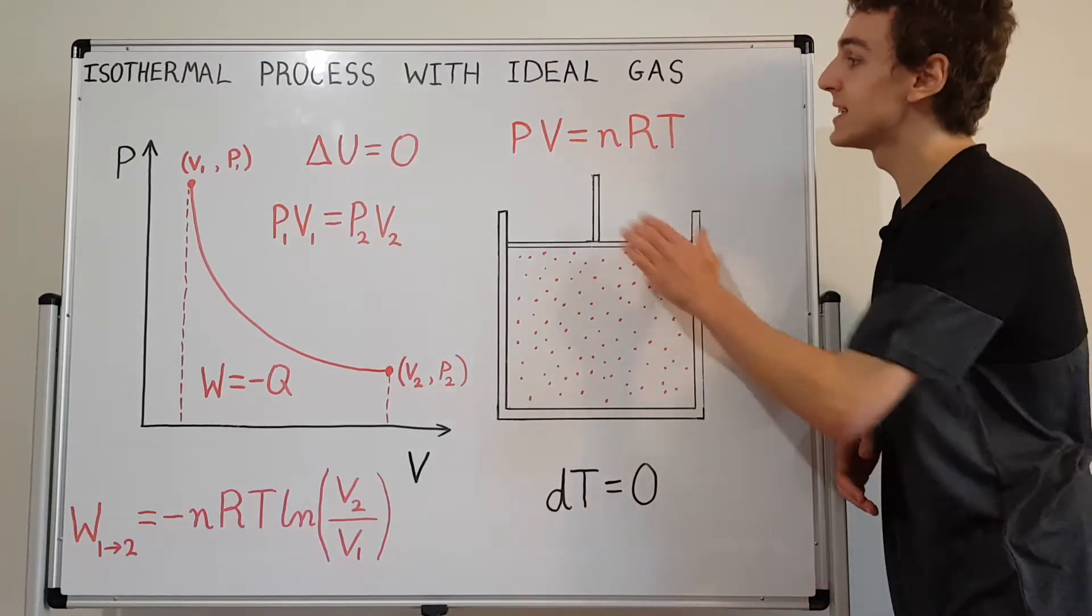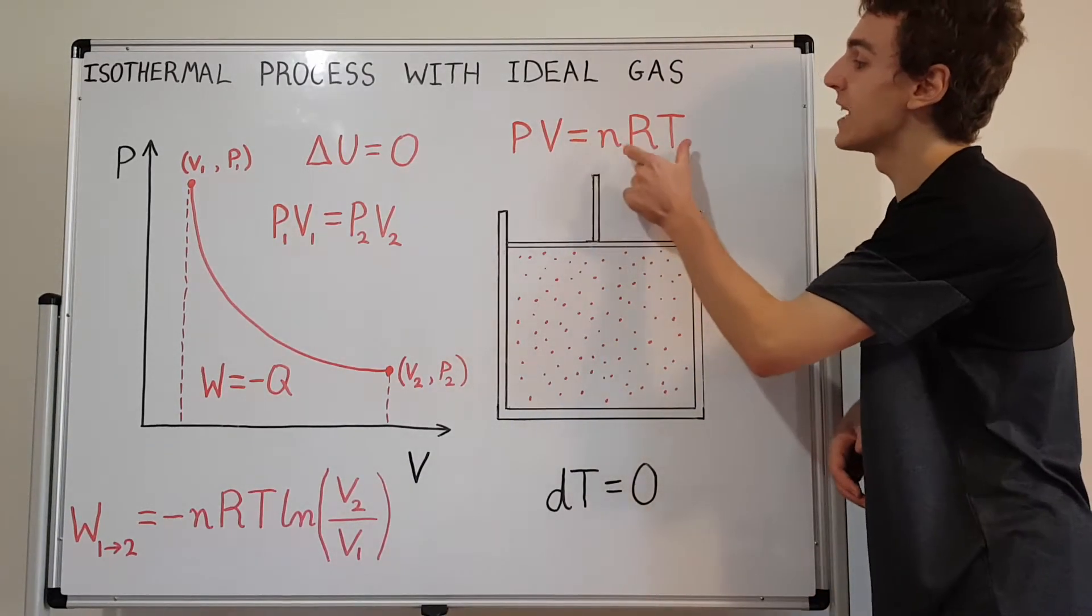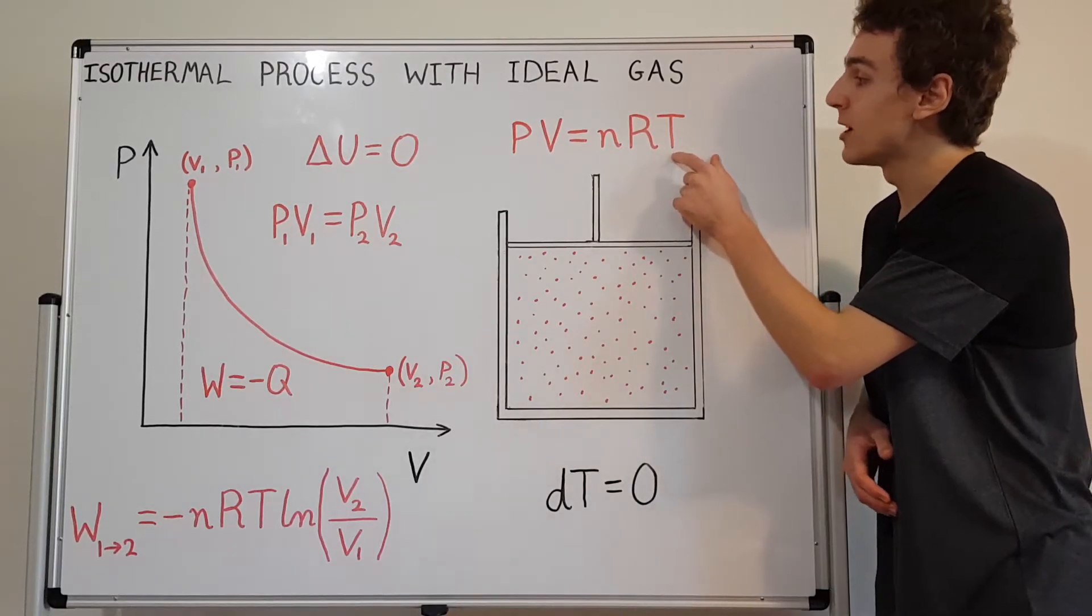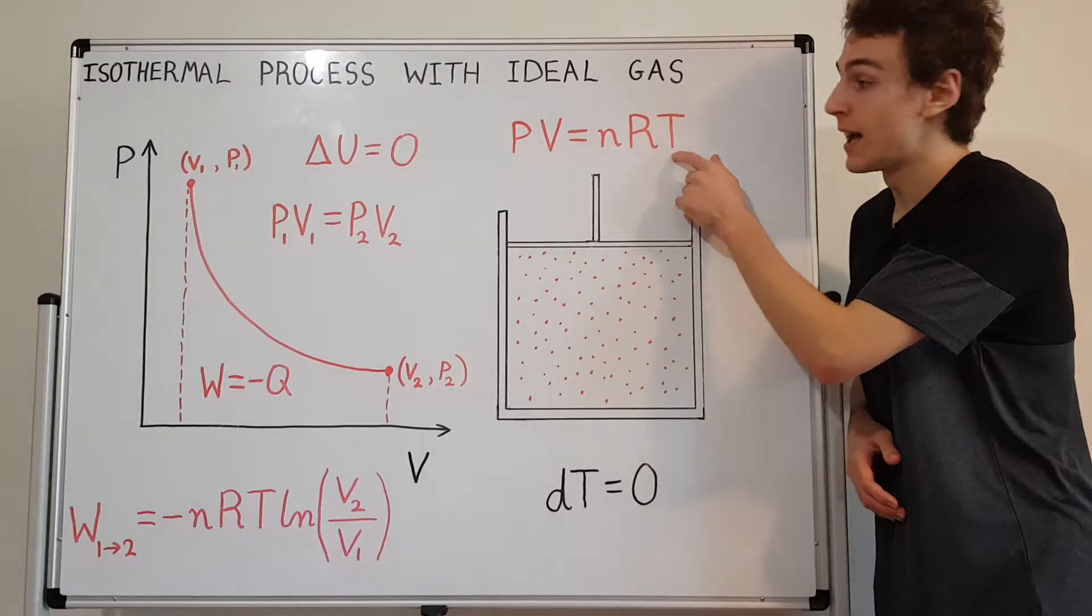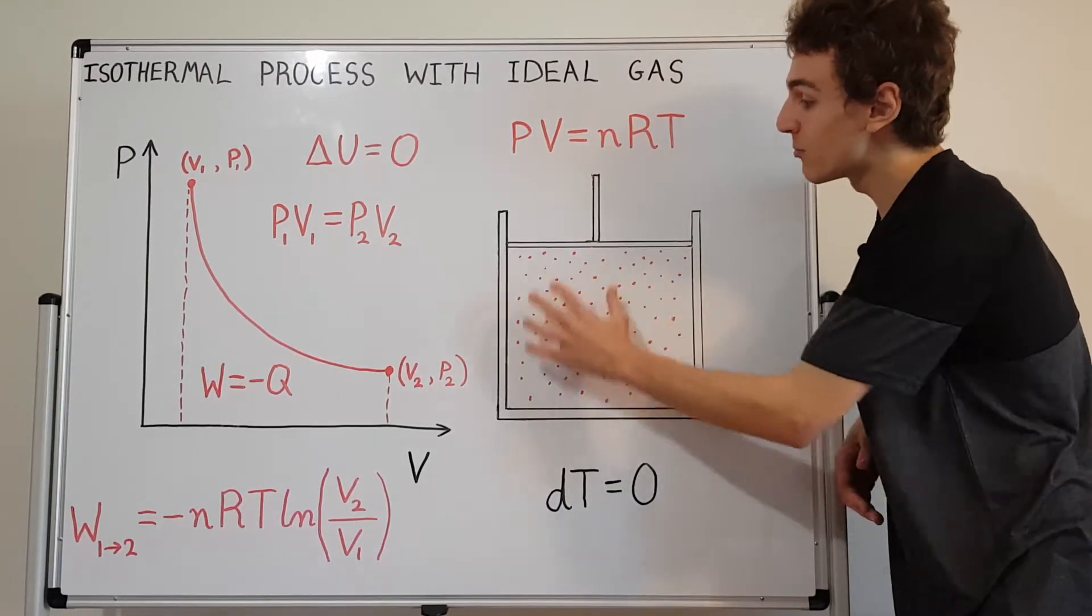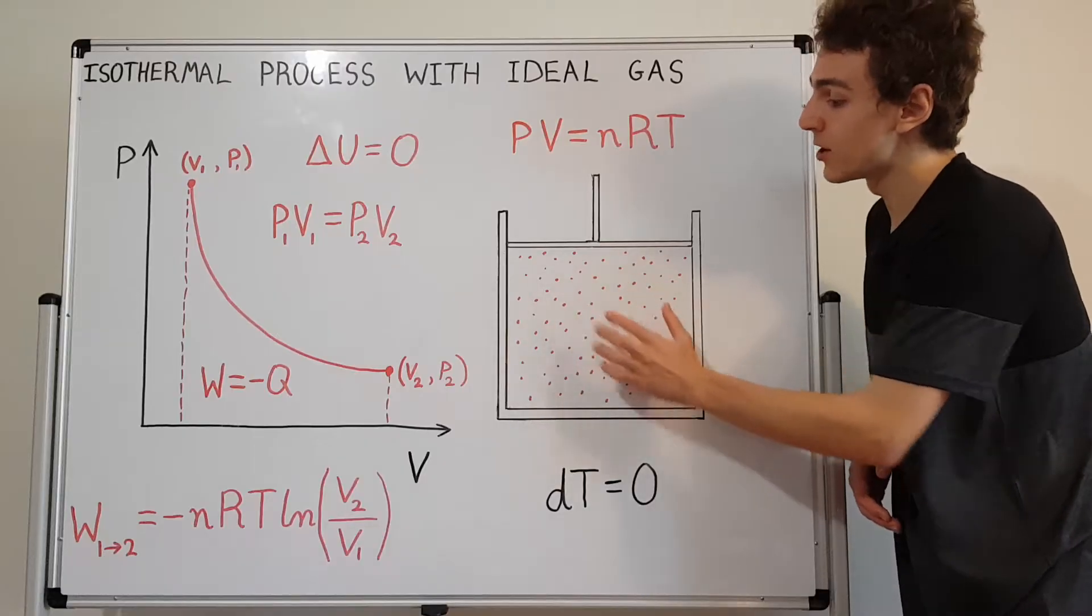So that means it satisfies the ideal gas law: PV equals nRT. So T, this term over here, this value is actually constant. N, the number of moles, that's also constant because the amount of particles inside this container is not changing.